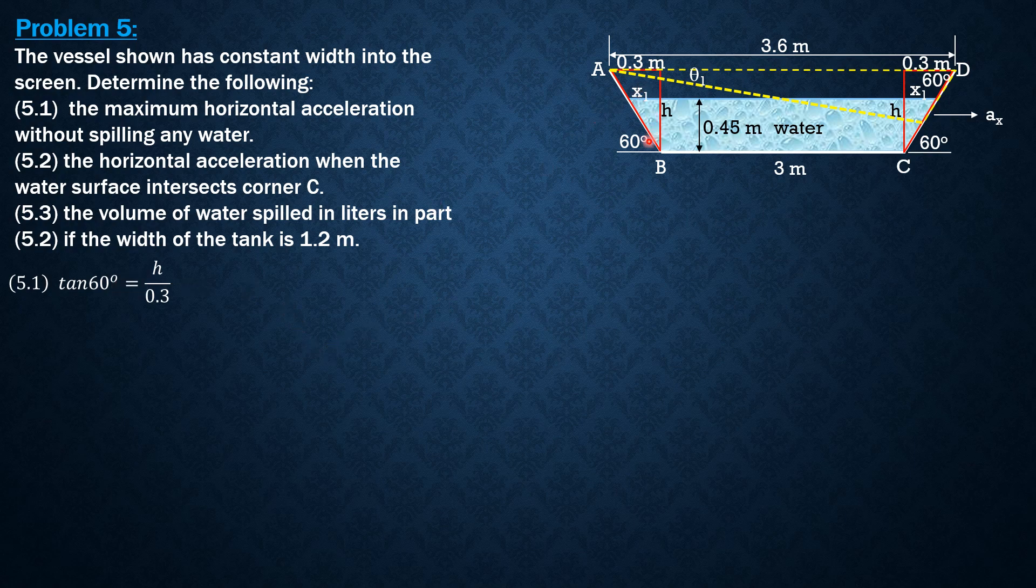So tangent 60 degrees is h over 0.3, so h is 0.5196 meter. Then x₁ by similar triangles: x₁ to 0.45 equals 0.3 to h which is 0.5196, so x₁ is 0.2598 meter. So this height therefore is h 0.5196 minus the depth of water 0.45, so that's 0.0696 meter, which is necessary for computing theta 1 later.